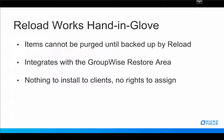Reload works hand in glove with GroupWise. Items can't be purged from the GroupWise mailbox until they're backed up by Reload — that's a feature you turn on inside GroupWise, and Reload integrates with it instantly. It also integrates with what's called the GroupWise restore area, which is a really powerful feature when it comes to restoring email for users. There's nothing to install to your clients and no rights to assign. Setting up restore areas is typically about a 15-minute process done one time.